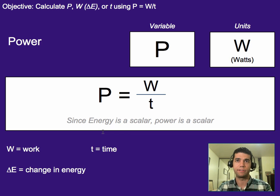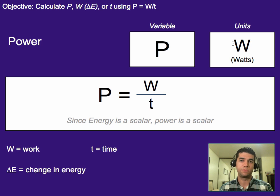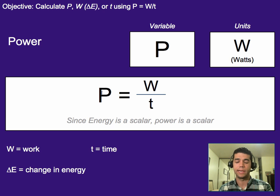That leads us to the official definition. The variable for power is P — a capital P. The units are watts. We have three Ws: a W for weight, a W for work, and a W in the units for watts. You've seen these units before — speakers are often measured in watts, microwaves, refrigerators, all of it's usually measured in watts. Power is calculated by work divided by time. And since energy is a scalar, this value for power is also going to be a scalar.